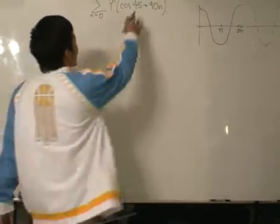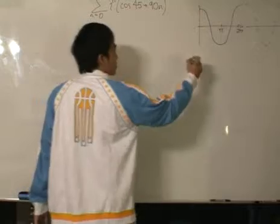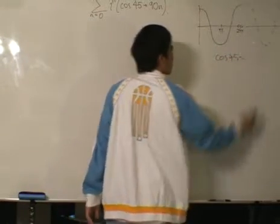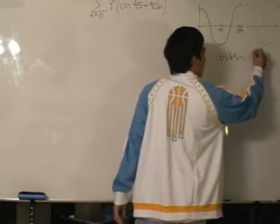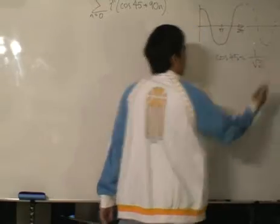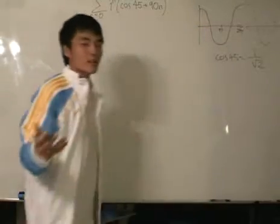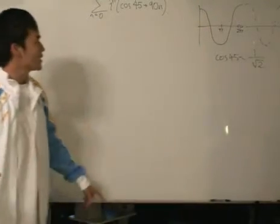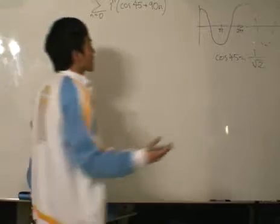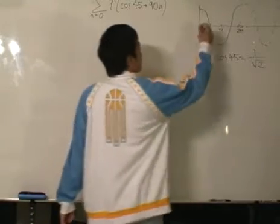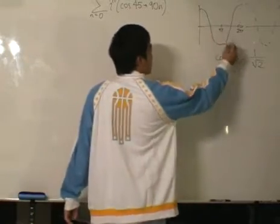So cosine 45, as we know, is a special angle. I'll just write it here. Cosine 45 is equals to 1 over root 2 from the right-handed isosceles triangle. So what I like to do is that I will put 45 degrees here, so this is in degrees.